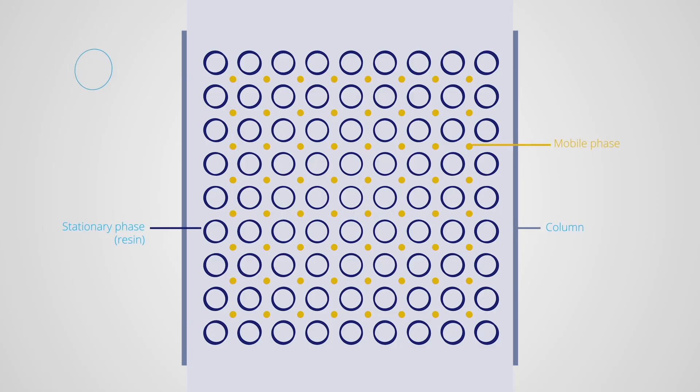Separation of the sample's components is achieved in the analytical column. The components are separated based on their relative affinity for the stationary phase compared to the mobile phase. In this case, the stationary phase inside the column is a resin that has been bonded to aminated latex beads. The functional groups bonded to the resin are positively charged in order to attract the analyte anions.